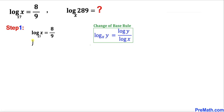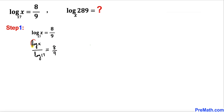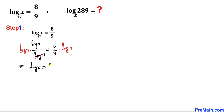Using the change of base rule, the left-hand side can be written as log of x divided by log of 17, equal to 8 divided by 9. Now we want to isolate log of x, so we multiply both sides by log of 17. This gives us log of x equals 8 over 9 times log of 17.